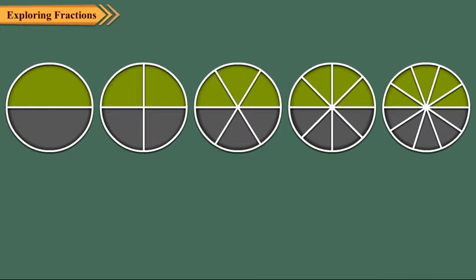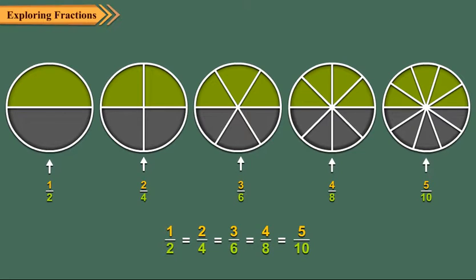Now, observe these circles. Here, the circles have been divided into two, four, six, eight and ten equal parts. The shaded portions of these circles show half, two upon four, three upon six, four upon eight and five upon ten, respectively. Do you observe any similarity among the shaded portions of these circles?